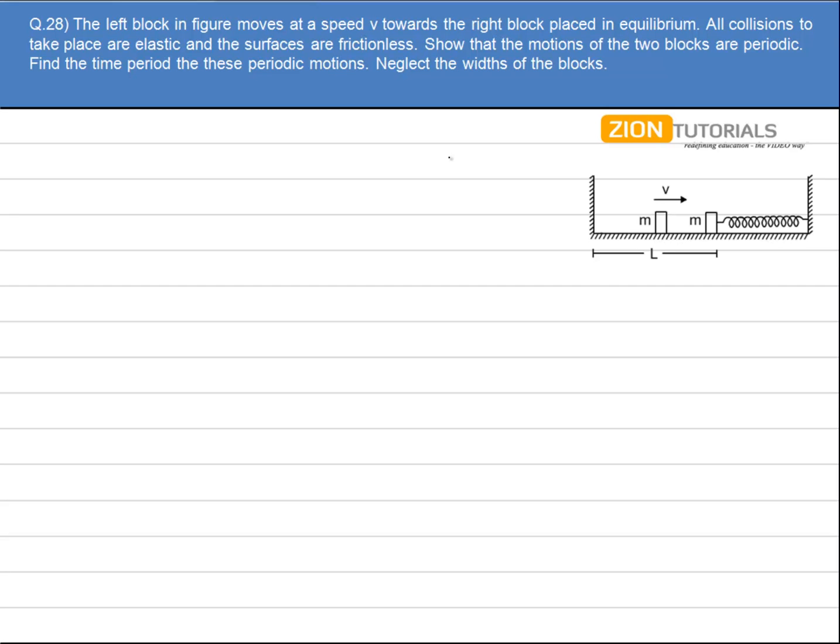The left block in the figure moves at a speed v towards the right block placed in equilibrium. All collisions to take place are elastic and the surfaces are frictionless. Show that the motion of the two blocks are periodic. Find the time period of this periodic motion.